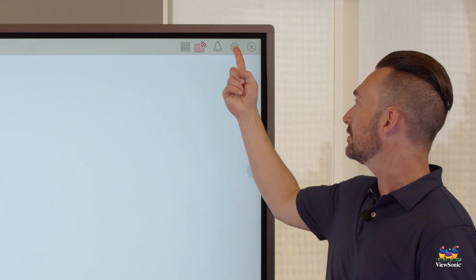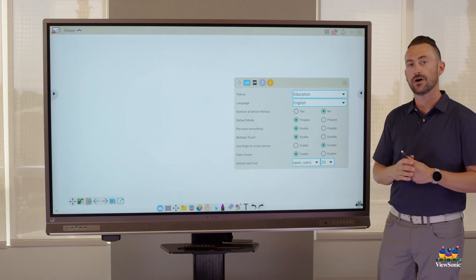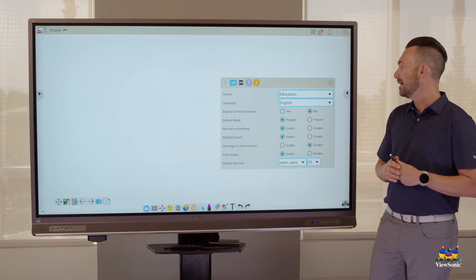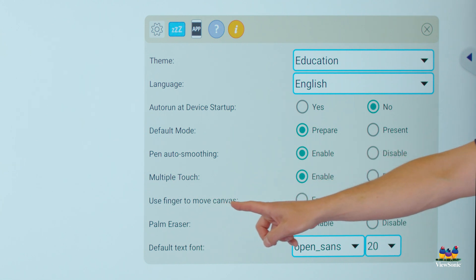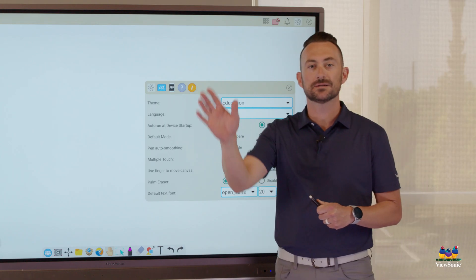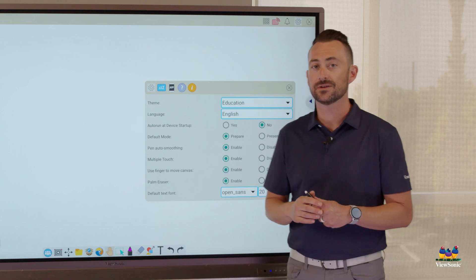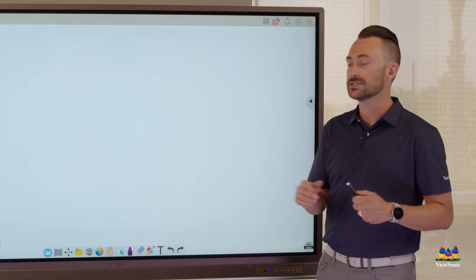So what we're going to do is go to the Settings button on our 52 series. And then you're going to see this option called Use Finger to Move Canvas. If this is enabled, what it does is it makes all my touches essentially Infinite Canvas. So this is how it works.